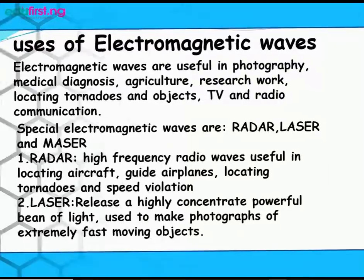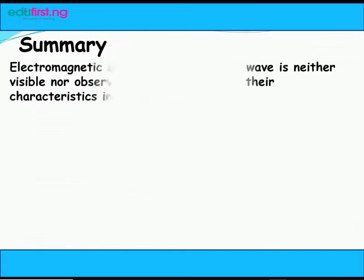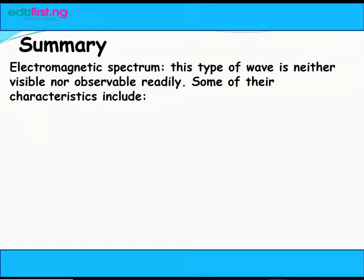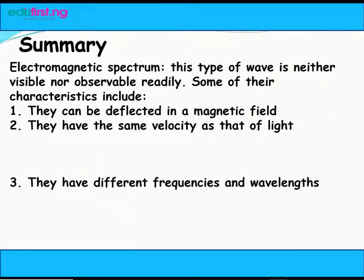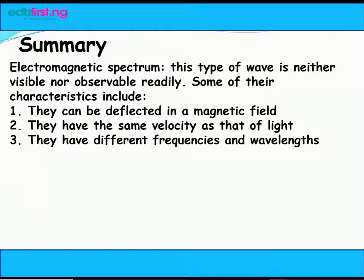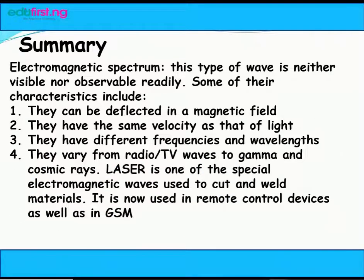Summary. Electromagnetic spectrum: this type of wave is neither visible nor observable readily. Some of their characteristics include: they can be deflected in magnetic field; they have the same velocity as that of light; they have different frequencies and wavelengths; they vary from radio or TV waves to gamma and cosmic rays. Laser is one of the special electromagnetic waves used to cut and weld materials. It is now used in remote control devices as well as in GSM.